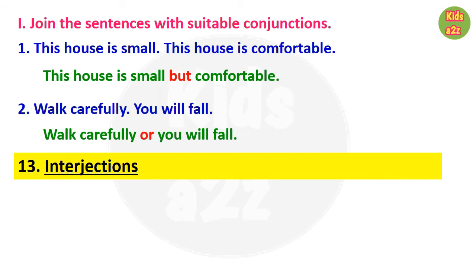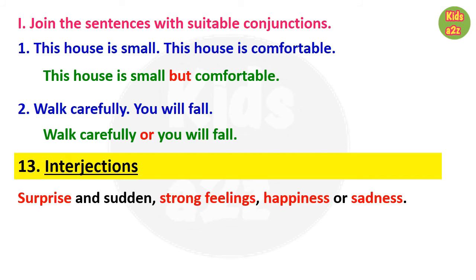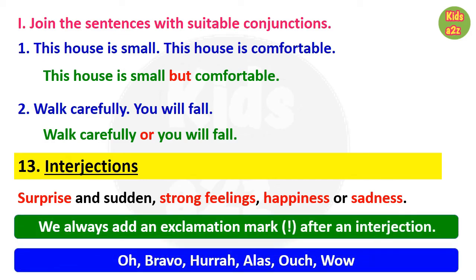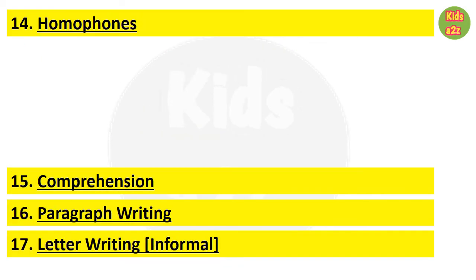The next topic is interjections, which is new for kids. Interjections are words that show surprise and sudden strong feelings — they may show happiness or sadness. We always add an exclamation mark after an interjection. Some commonly used interjections are: oh, bravo, hooray, ouch, and wow. More will be covered in detail in a separate video.